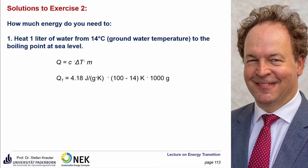Putting in the numbers: specific heat of water is 4.18 joule per gram Kelvin, the temperature difference is 100 minus 14 Kelvin, and one liter of water weighs one kilogram or 1,000 grams. We call it Q1 because it's the first part of the exercise. The solution is 359.5 kilojoule.